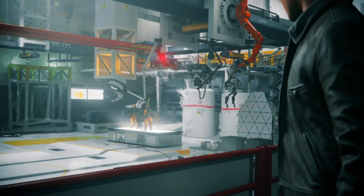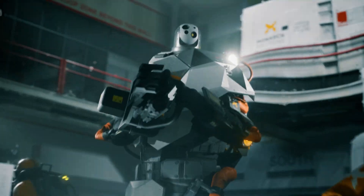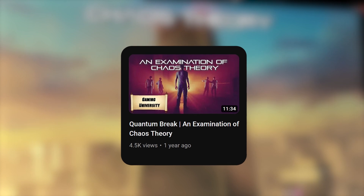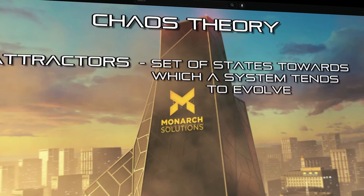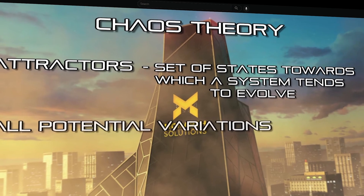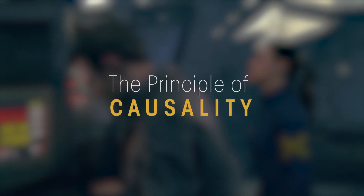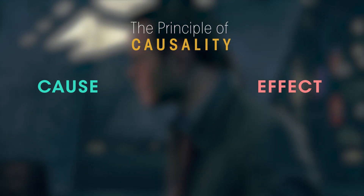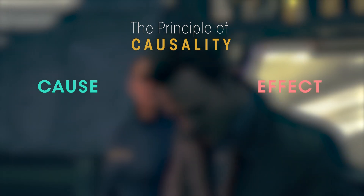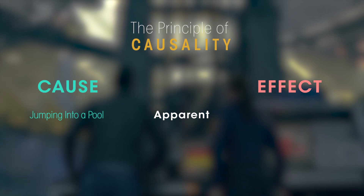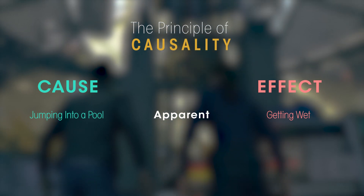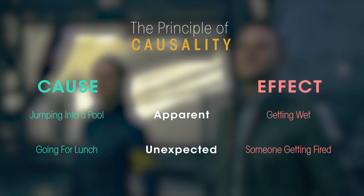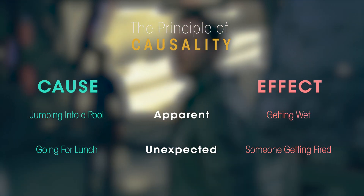Before diving into each of their reports, let's discuss the nature of these ripples and causality. In a previous video in this series, we discussed chaos theory — the mathematics of complex systems and how small actions can lead to unpredictable outcomes. The principle of causality is the relationship between cause and effect, that every set of events is a result of what came before. The effects can be apparent, like jumping into a pool will have the causal effect of getting wet. But others can be unexpected, like going out for lunch can lead to a random person getting fired.